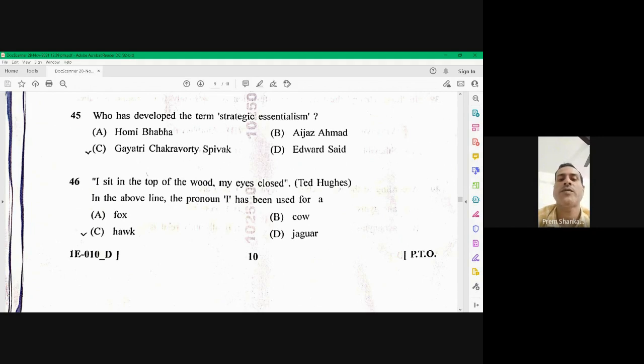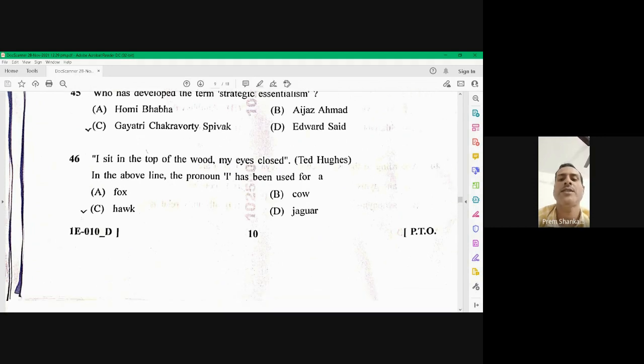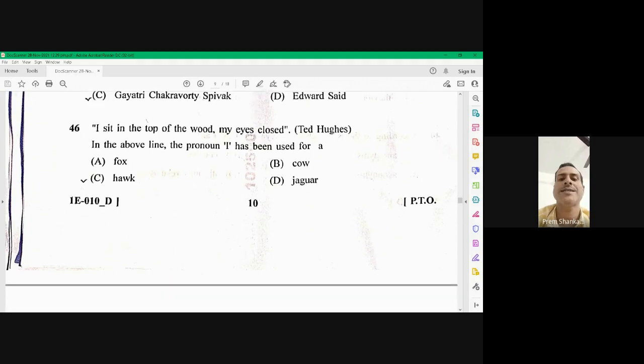I sit in the top of the wood, my eyes closed. So this uh, uh, uh, first line of the hawk in the rain, uh, the right option is hawk because I is used for hawk. C is the right option, 46 C.